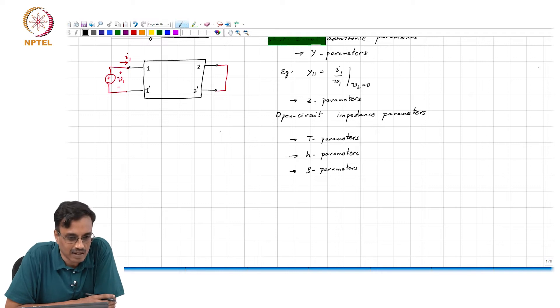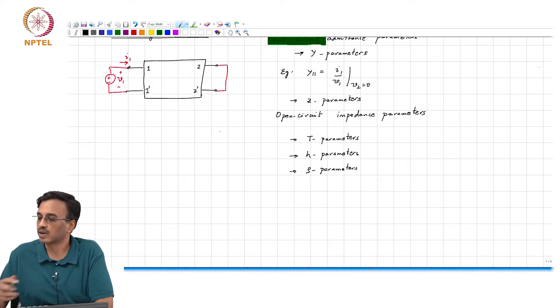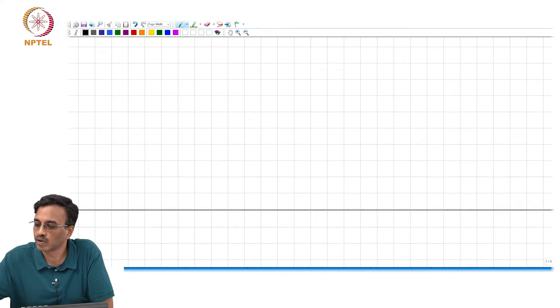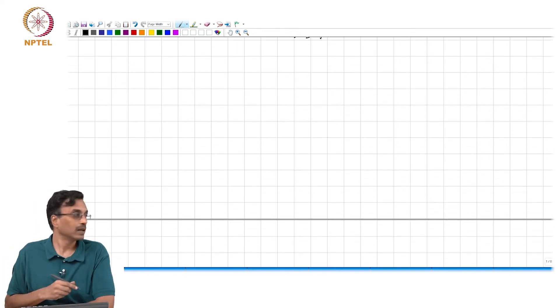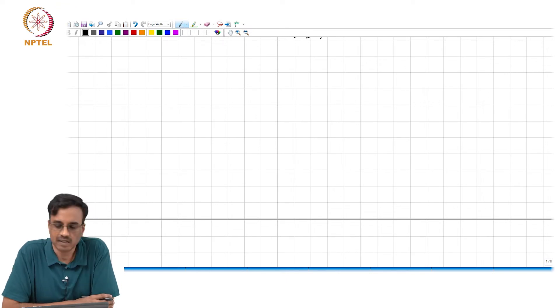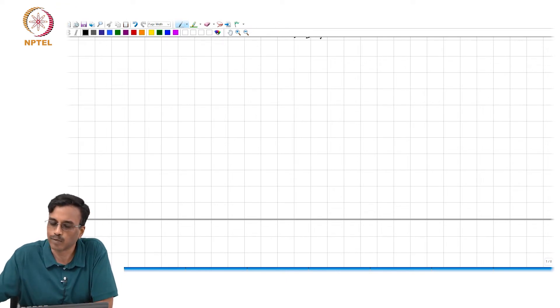It turns out that there is - the scattering parameters are grounded in practice, and they satisfy a requirement. To see what that requirement is, I will have to go back a little bit and talk about transmission lines.